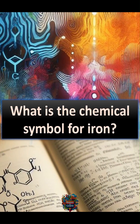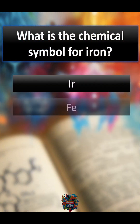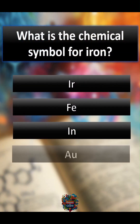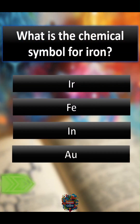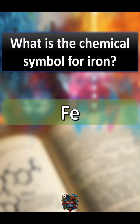What is the chemical symbol for iron? A IR, B FE, C IN, D O. Correct answer: B FE.